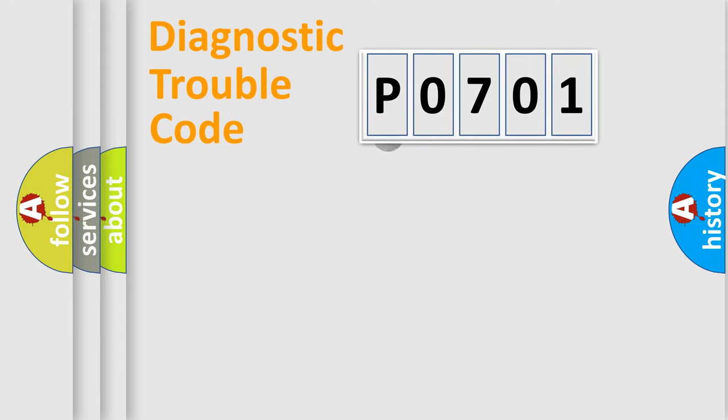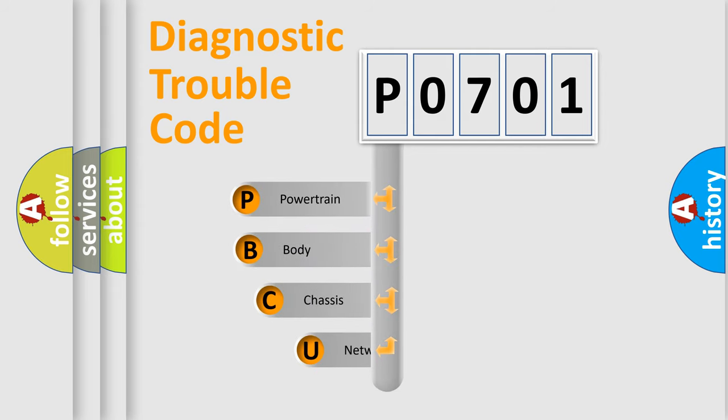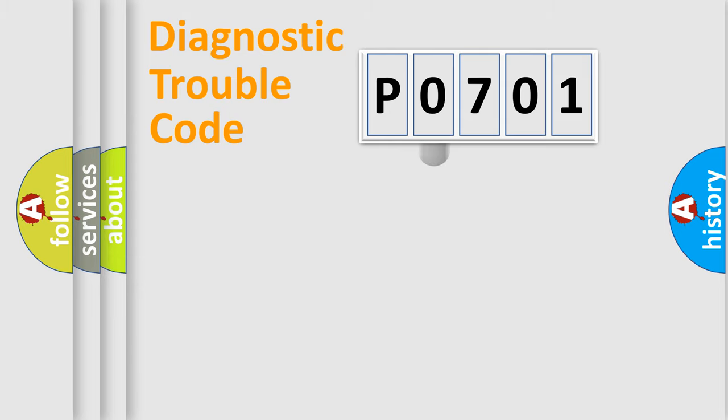First, let's look at the history of diagnostic fault code composition according to the OBD2 protocol, which is unified for all automakers since 2000. We divide the electric system of automobile into four basic units: Powertrain, Body, Chassis, Network. This distribution is defined in the first character code.